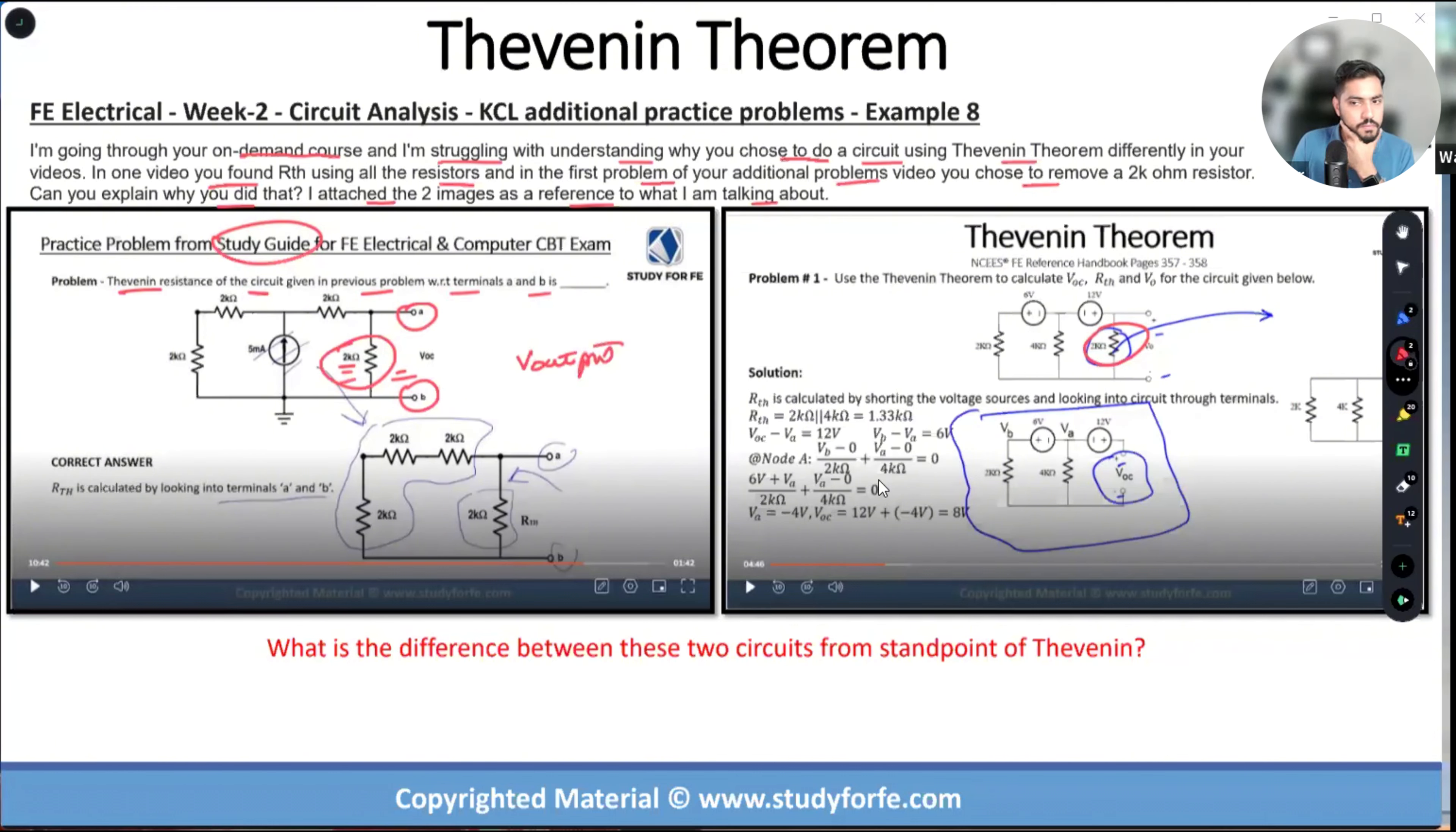So that basically means that these are the two terminals, and you can connect anything to the circuit. If I create a black box and consider that everything between these two terminals is a black box, there are two terminals that are sticking out, a and b. This needs to be converted into Thevenin.